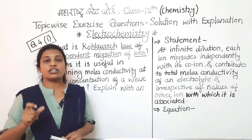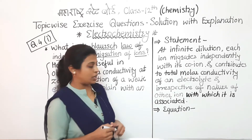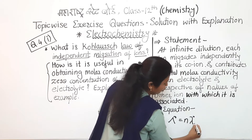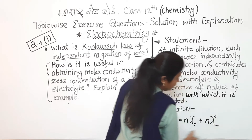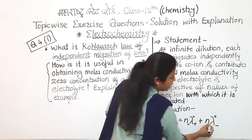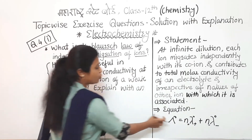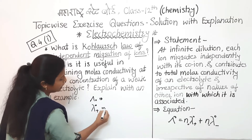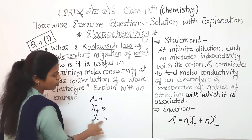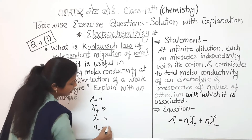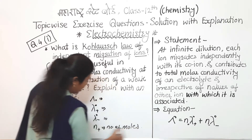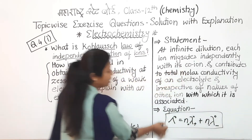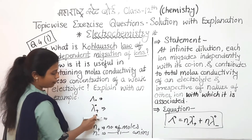Now, what is the equation for Kohlrausch's law? The equation is: Λ°m = n⁺λ°₊ + n⁻λ°₋, where n⁺ is the number of moles of the cation and n⁻ is the number of moles of the anion. Here, Λ°m is the total molar conductivity at zero concentration, λ°₊ is the molar conductivity of the cation, and λ°₋ is the molar conductivity of the anion.